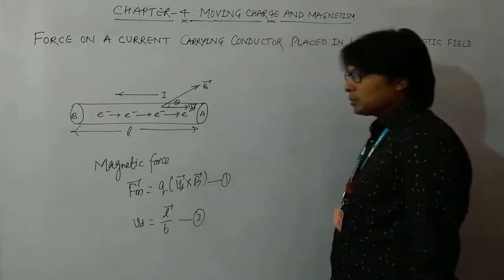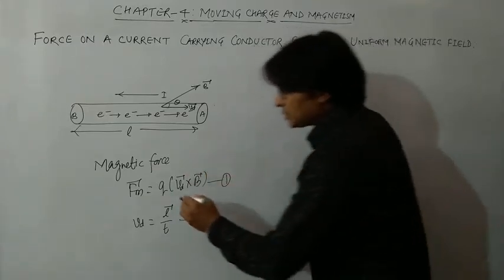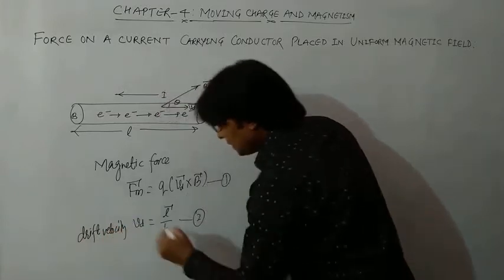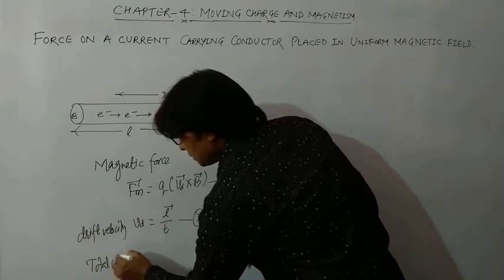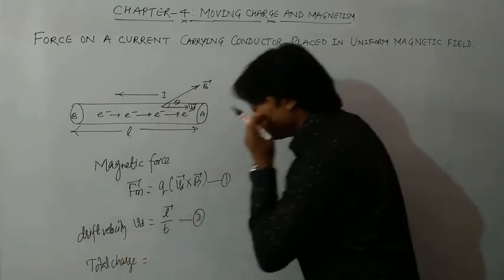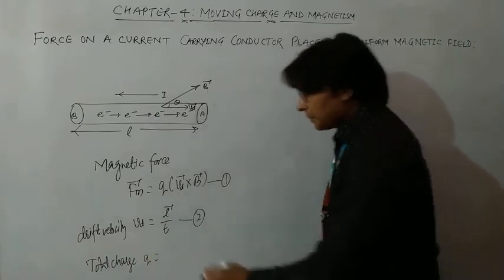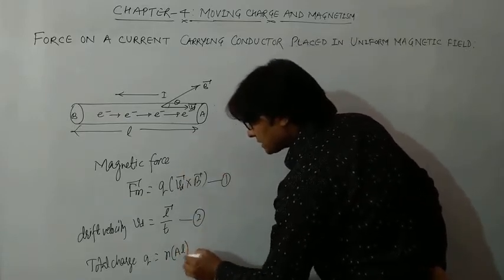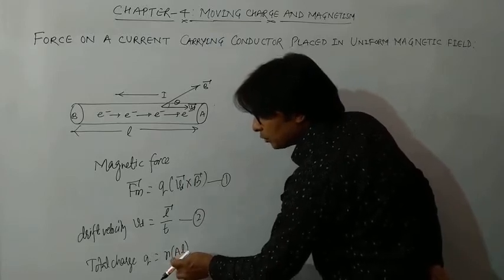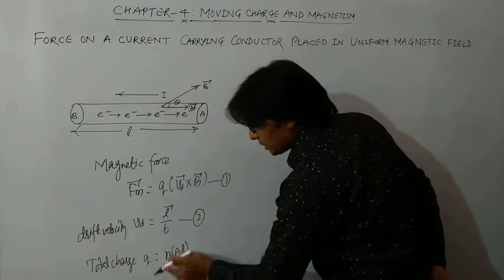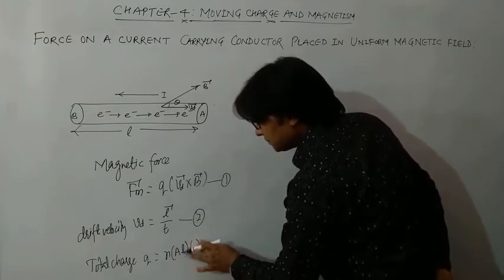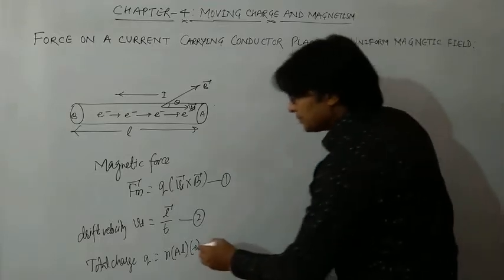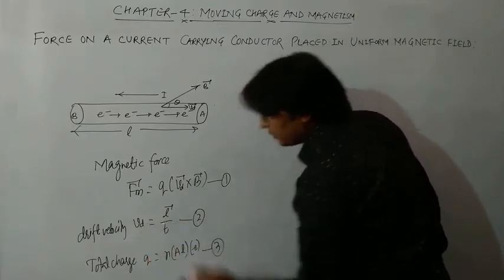One more thing: the total charge q will be the number of electrons per unit volume (n) multiplied by the volume of the conductor, which is cross-sectional area A times length L, giving the total number of electrons. The charge on one electron is minus e, so total charge q equals minus n times e times A times L.